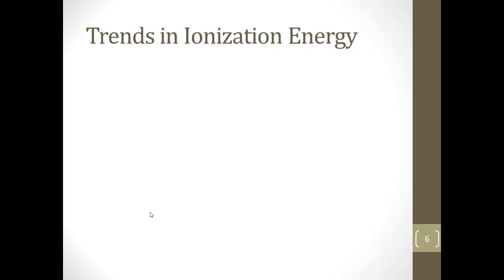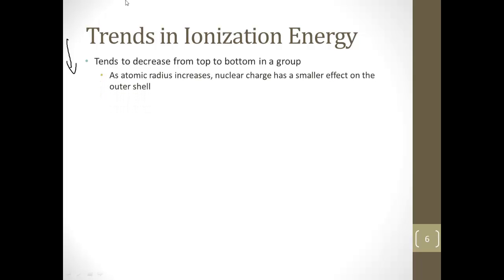So now we can think about our trends in ionization energy. They tend to decrease from top to bottom in a group. So as you go down a group, the ionization energy tends to decrease. And that's because as the atomic radius increases - as you go down the group, the atoms are getting bigger and bigger as you add new shells - and the nuclear charge in the center here doesn't have a strong pull on these outer shells. So it's easier to take it away because it's further away from the nucleus, which is holding everything together.